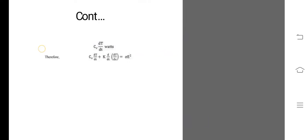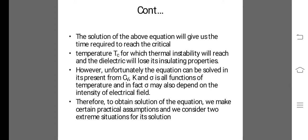The equation is: Cᵥ dT/dt plus K d²T/dx² equal to sigma E squared, where E is the electric field.